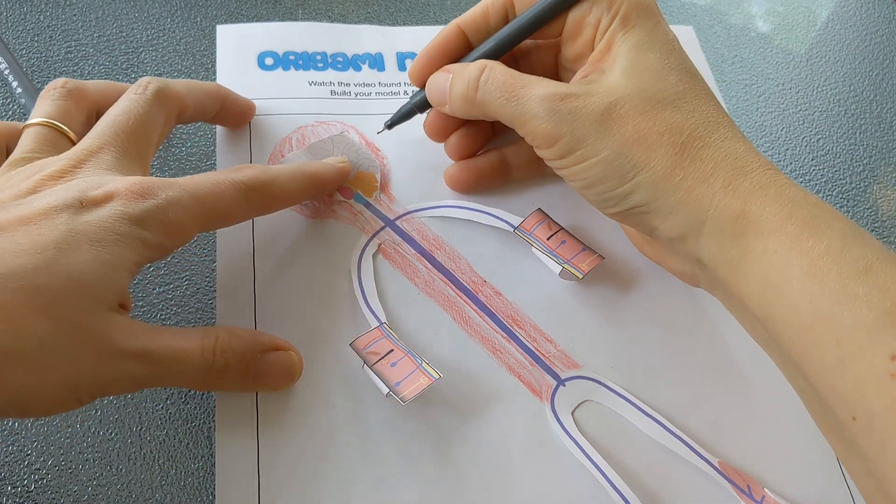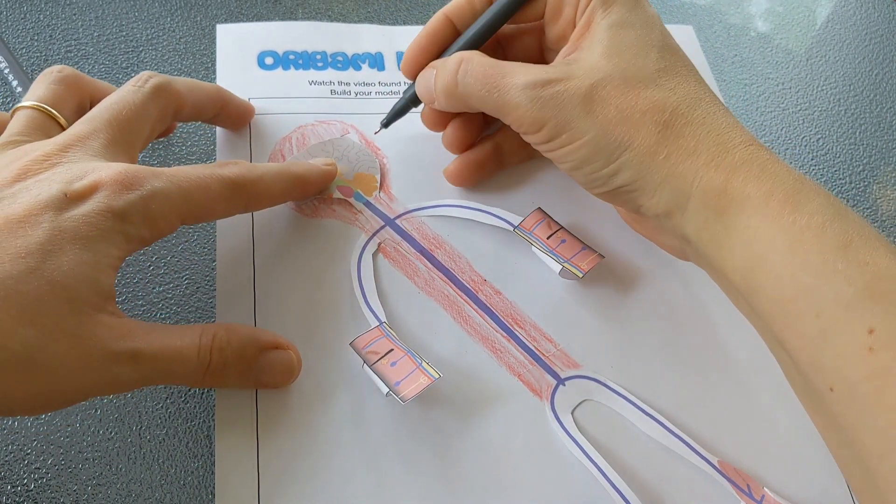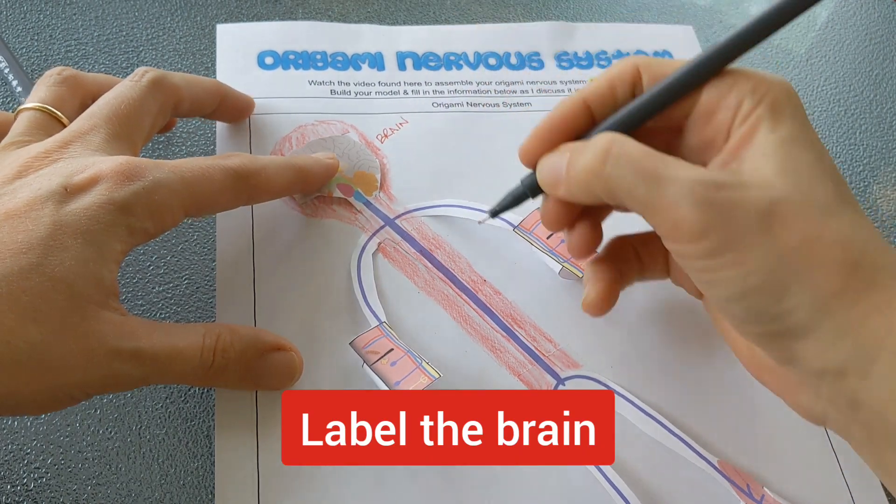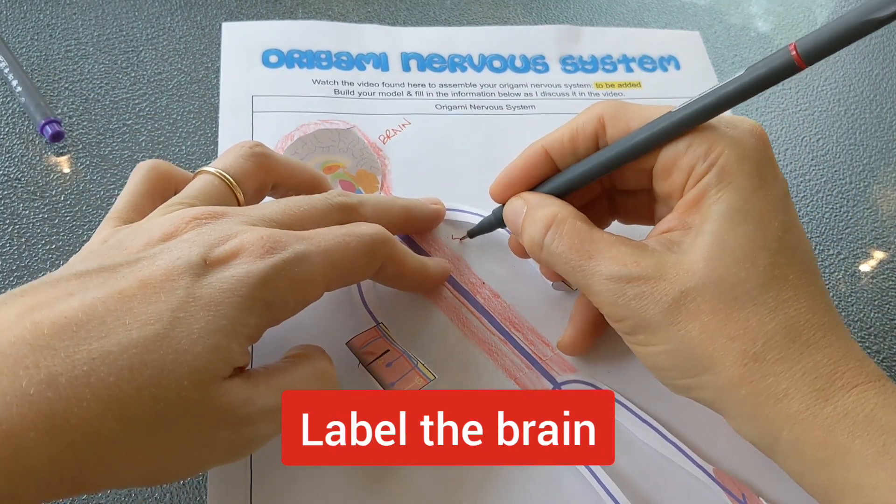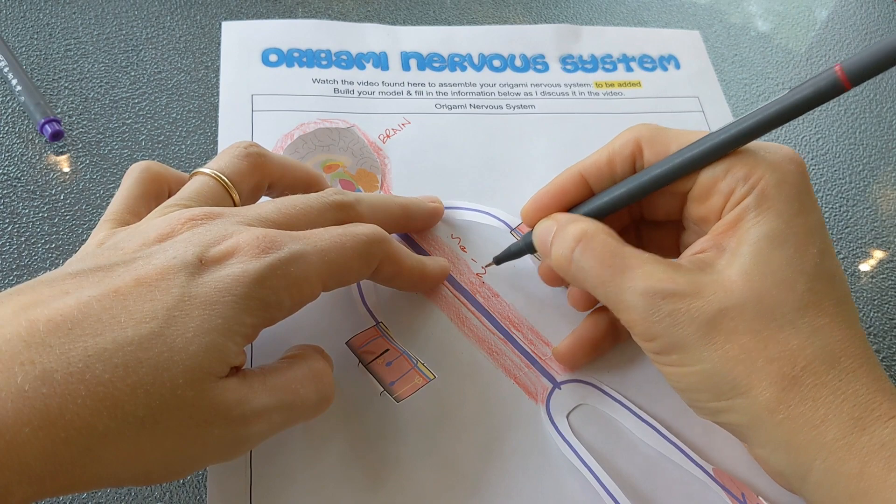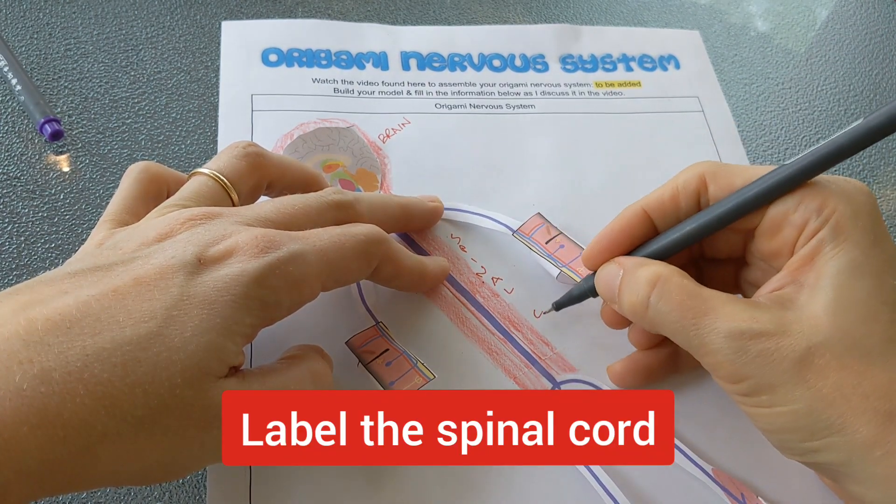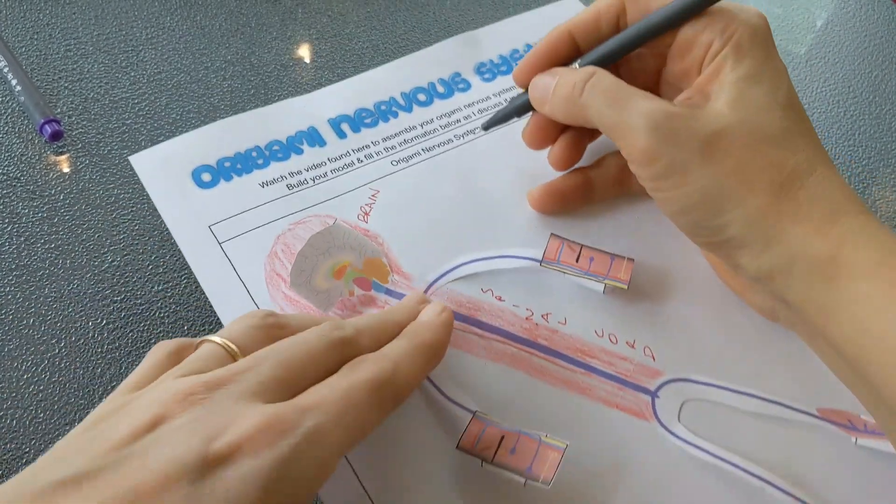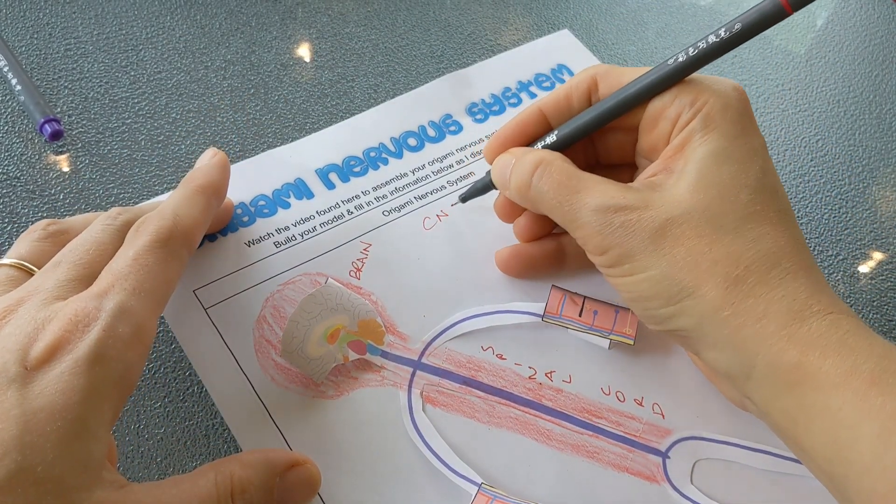Now we're going to do some notes about the central nervous system. It has two parts: it has the brain and it has the spinal cord. Those make up the central nervous system or CNS.